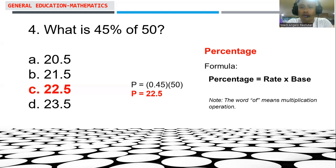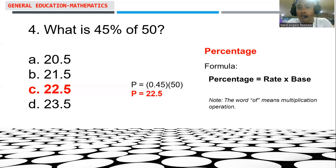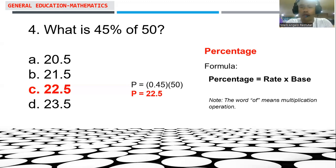Before solving, we need to convert 45% into its equivalent decimal form, which is 0.45. So what is 0.45 of 50? That is equal to 22.5, by simply multiplying them. So the answer here is 22.5.